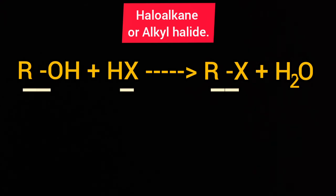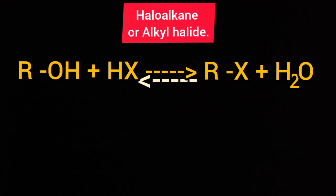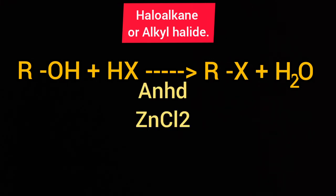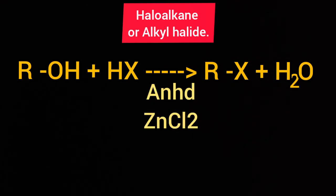This reaction is reversible because RX also reacts with water to give back ROH and HCl. So the yield of alkyl halide RX will be less. To increase the yield of alkyl halide, we have to remove water from this reaction. To remove the water, we use anhydrous zinc chloride, which absorbs water. ROH plus HX in the presence of anhydrous zinc chloride gives RX plus water.